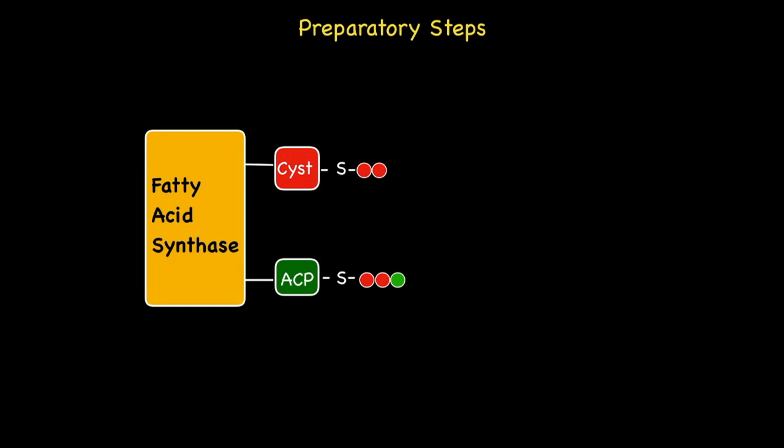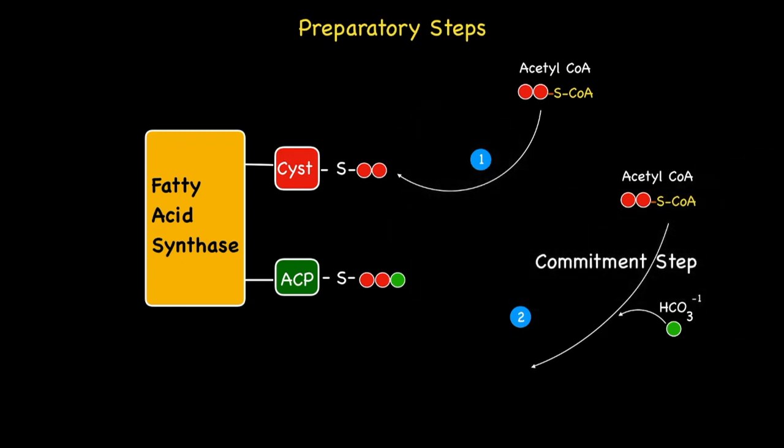Recall how in order to begin chain elongation, we need to undergo two preparatory steps. The attachment of a two-carbon acetyl group to the cysteine component of fatty acid synthase, and a second acetyl-CoA which combines with the bicarbonate ion during the commitment step to give malonyl-CoA which in turn attaches to the ACP component of fatty acid synthase. So, in short, in order for the first chain elongation to occur, two acetyl-CoAs are required as opposed to just the one. While the remaining six chain elongations only require one acetyl-CoA, two plus six gives us eight acetyl-CoAs in total.